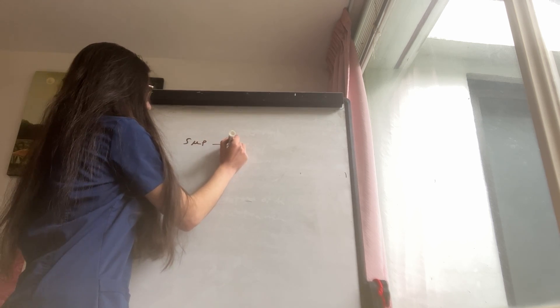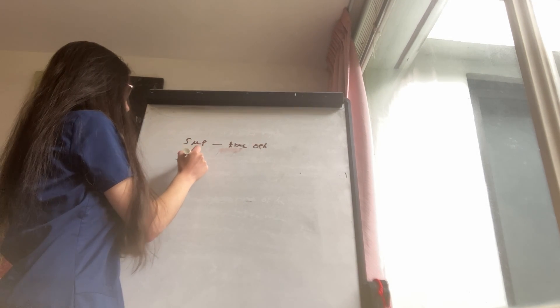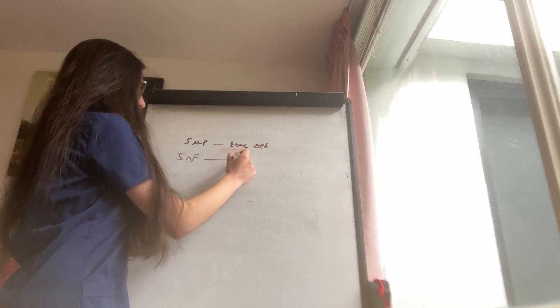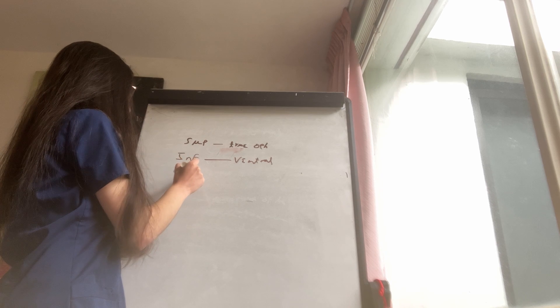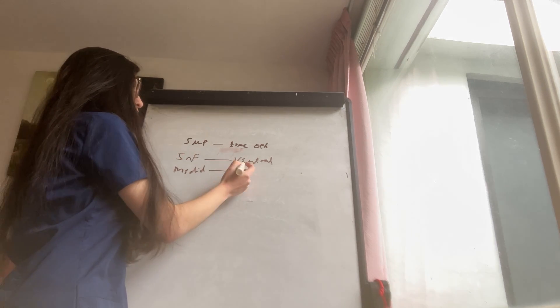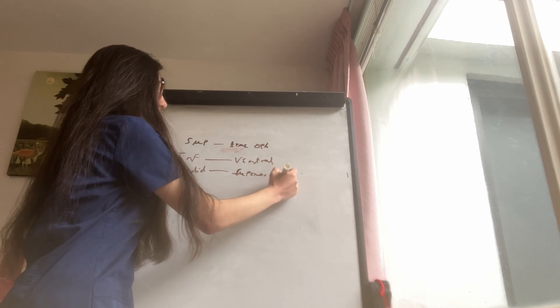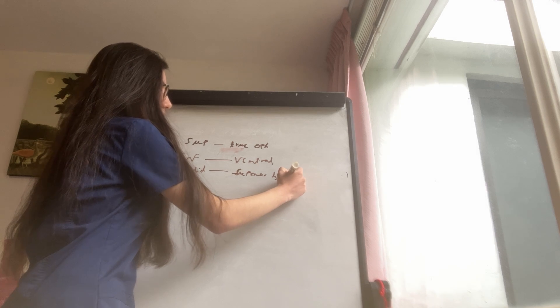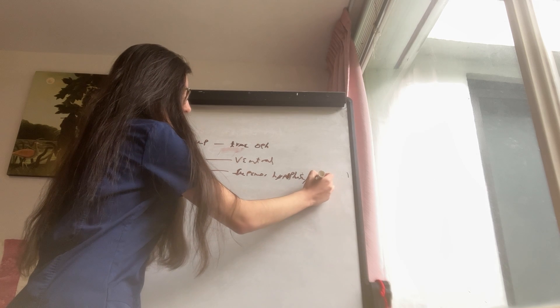Paraclinoid aneurysms can be divided into four types. The first is the superior paraclinoid aneurysm, or true ophthalmic aneurysm. The second is the inferior paraclinoid aneurysm, or ventral paraclinoid aneurysm. The third is the medial type, which can be divided into superior hypophysial and aneurysm of the carotid cave.